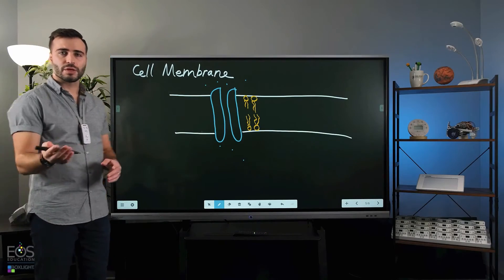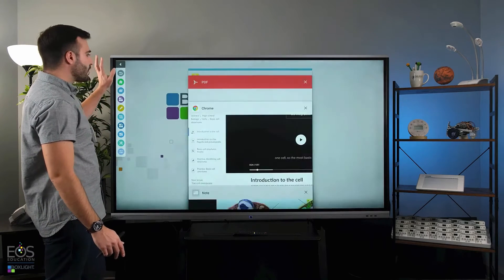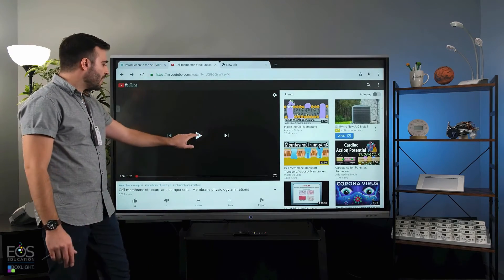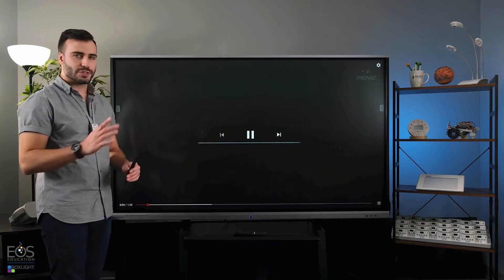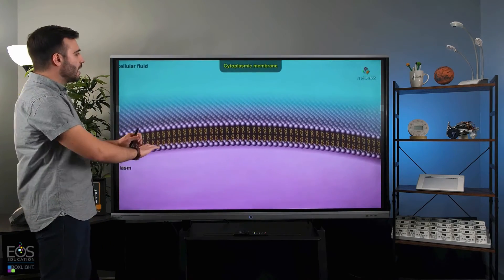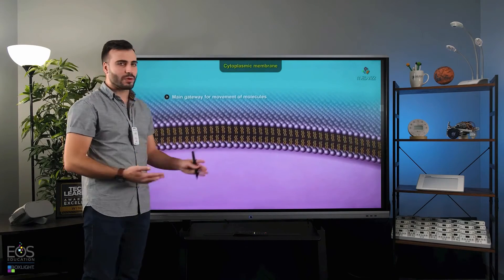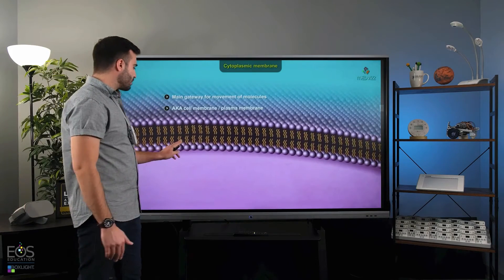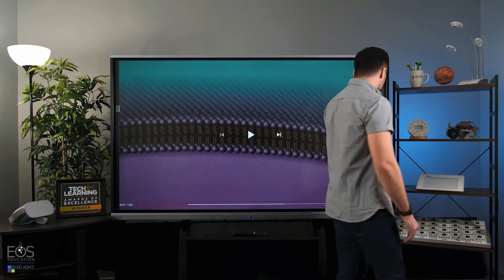Now of course at some point you're probably going to want to break out and go back to something like Chrome here to show a more detailed overview, maybe an animation. There's plenty that are out there that'll give students a great idea of what things actually look like, maybe the scale of these lipid bilayers, far more detail and effort than you could draw yourself. So that's of course an option as well.